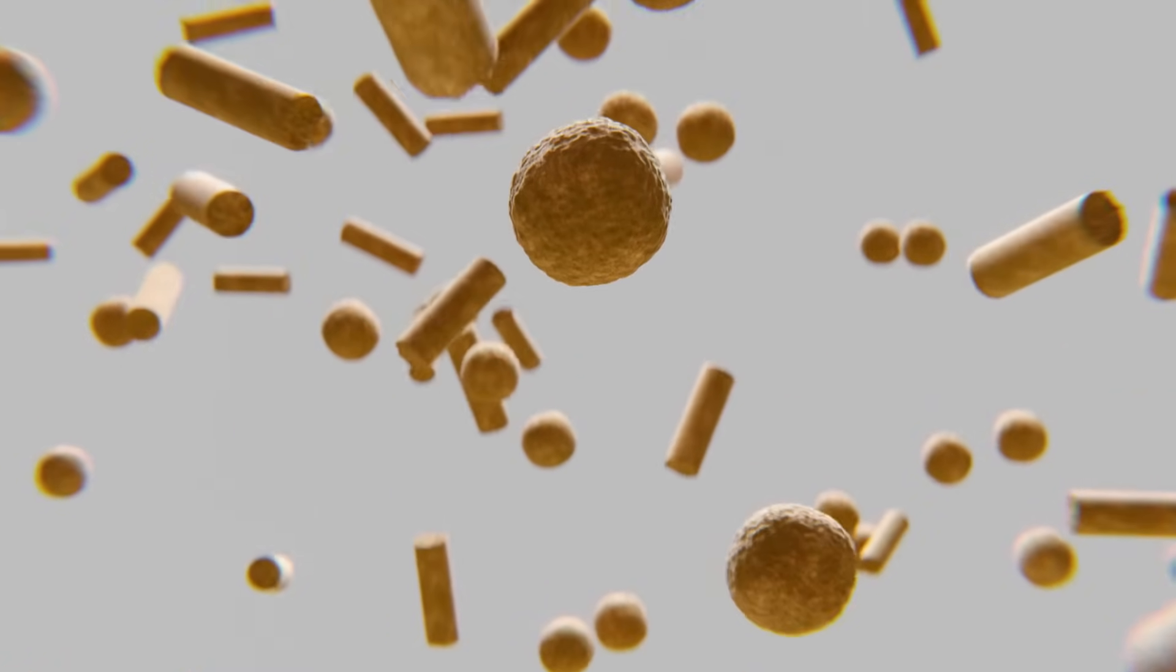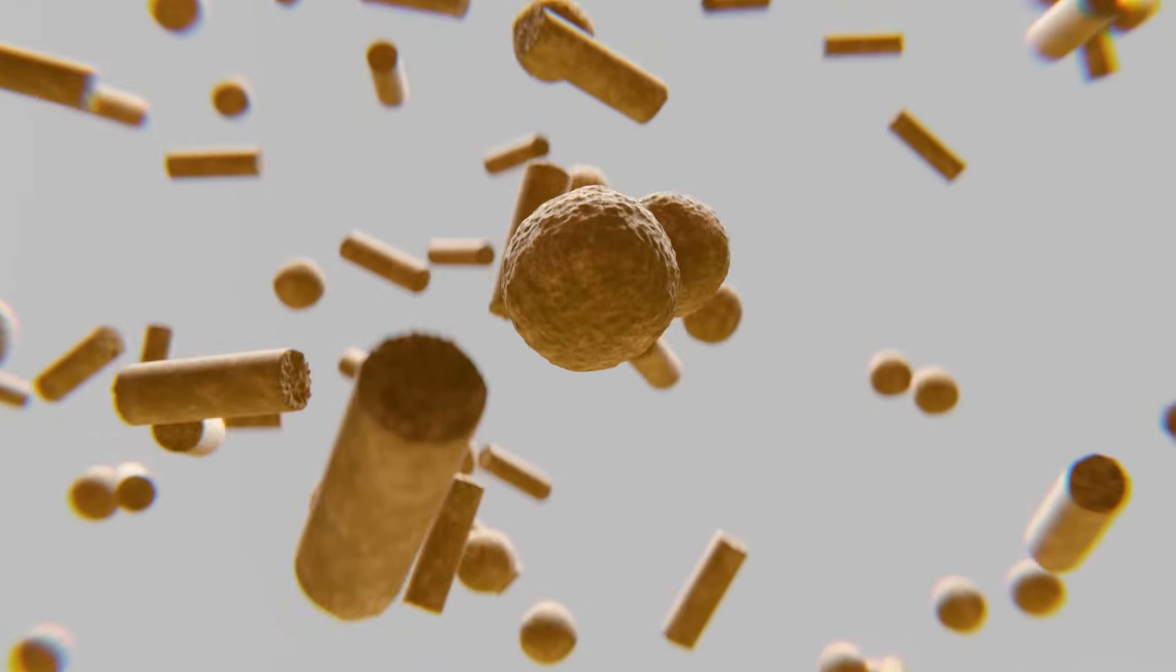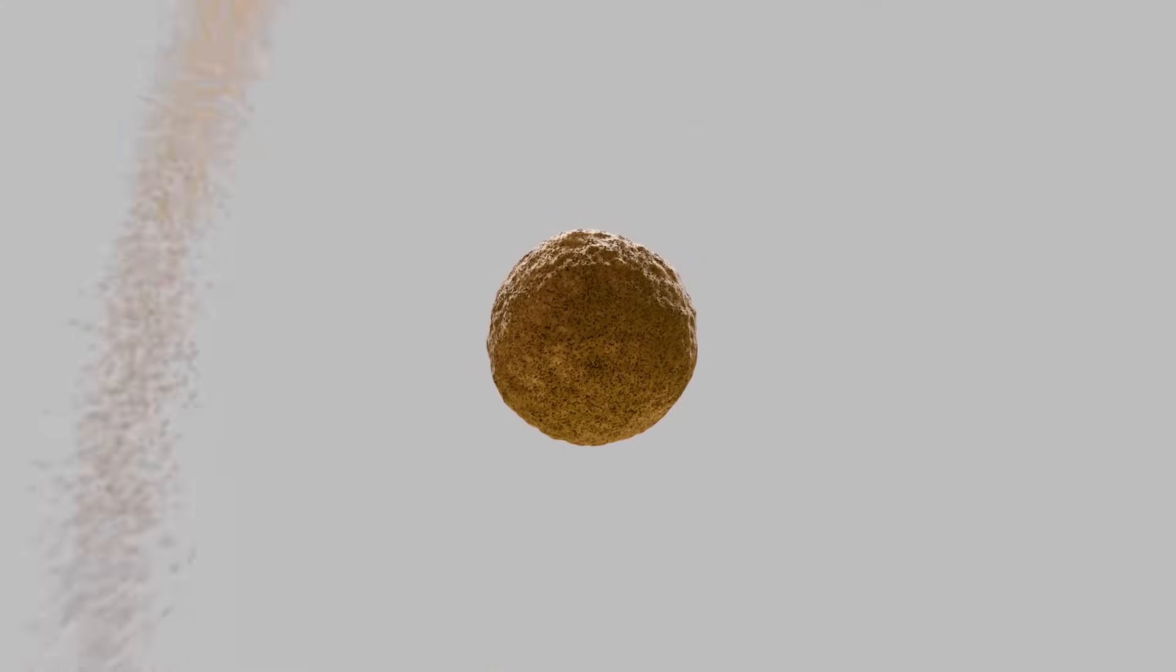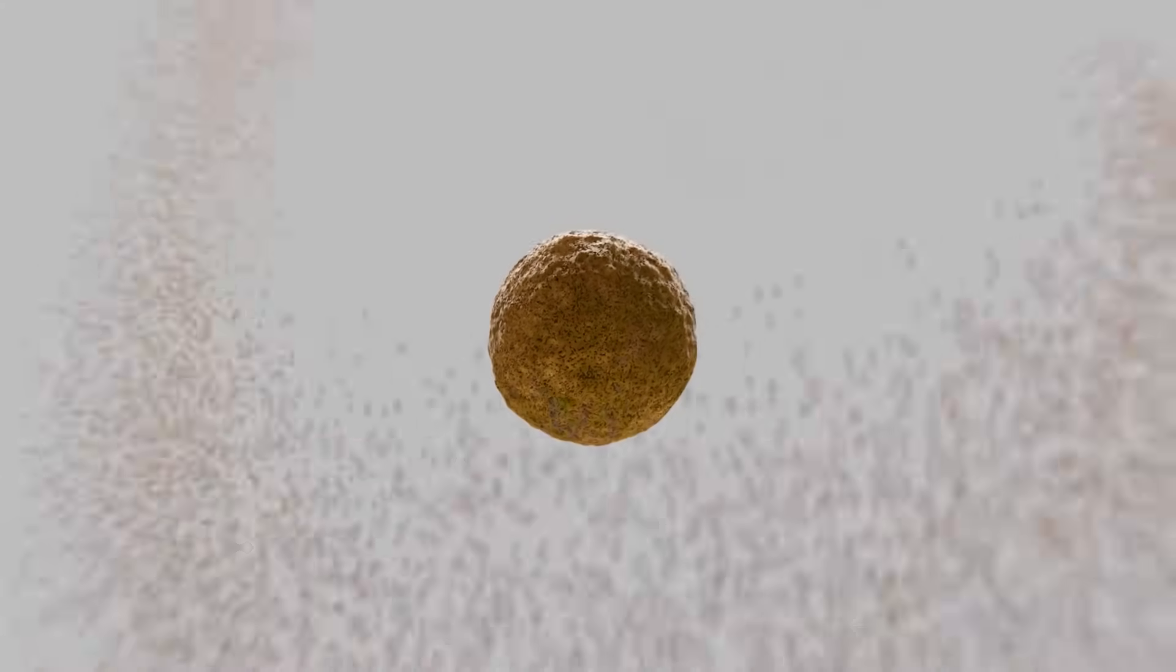Kibbles are dosed into a vacuum coater under atmospheric conditions. Then, a vacuum is created, and oils and liquids are sprayed on the kibbles in the exact desired quantities.